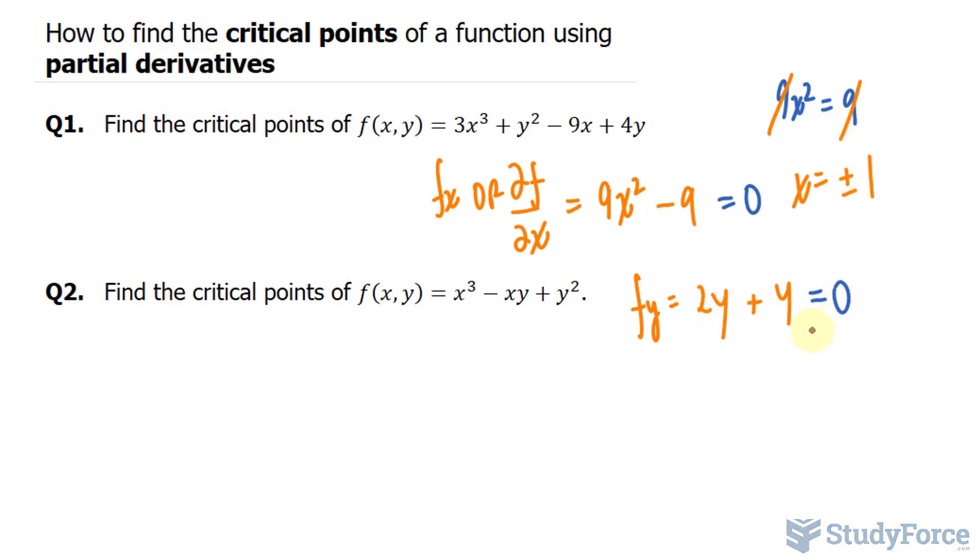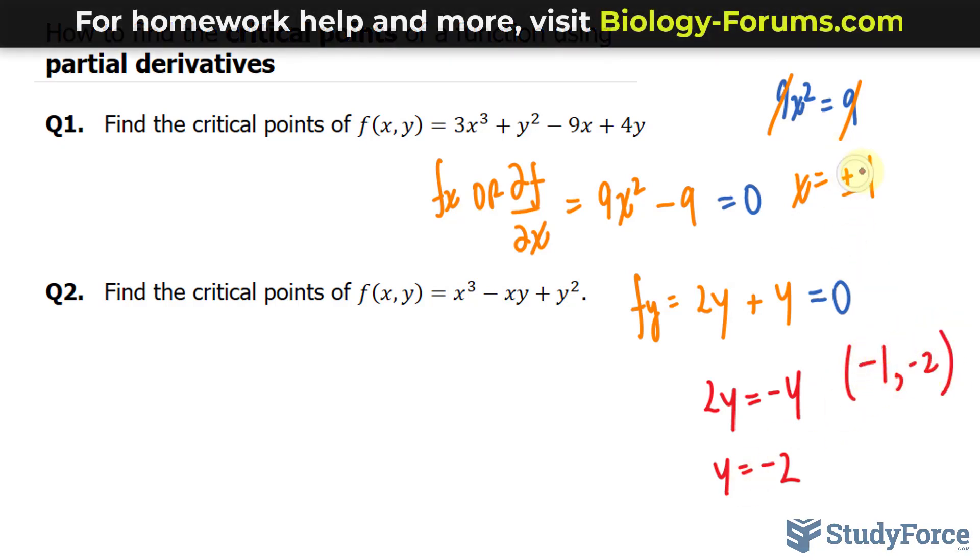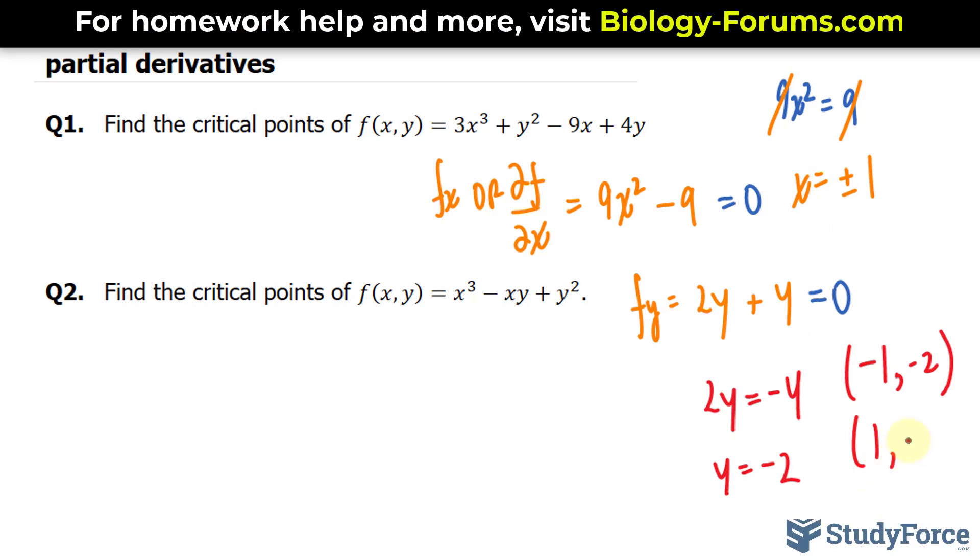Solving for y here, we'll take this plus 4 over, where we have 2y is equal to minus 4. Divide both sides by 2, we get y is equal to negative 4 divided by 2 is negative 2. So our critical points will be negative 1 and negative 2, and positive 1 and negative 2.